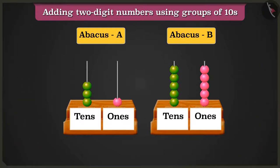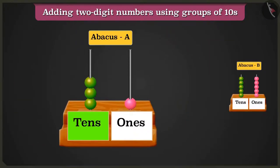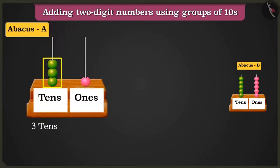Look, in abacus A, the box of tens has 3 beads and the box of ones has only 1 bead. So here abacus A has 3 tens and 1 one.